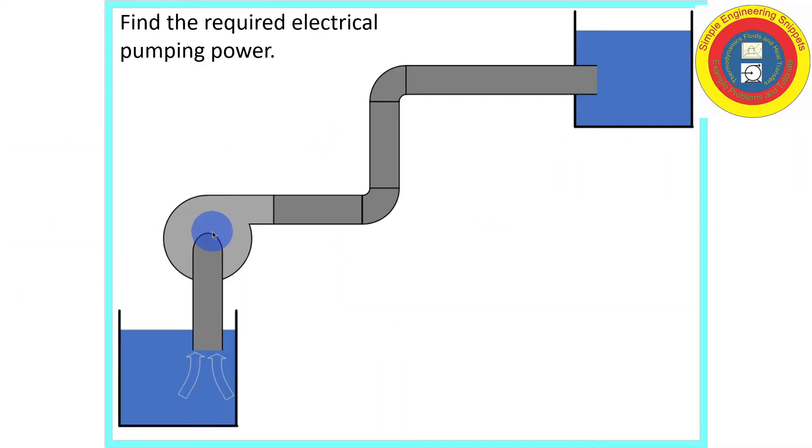This is our system. A single pump takes a suction from a lower tank and delivers water to a tank at a higher elevation. There are several minor losses that must be accounted for, including an entrance loss, an exit loss, and two 90 degree elbows. Here is the provided data.